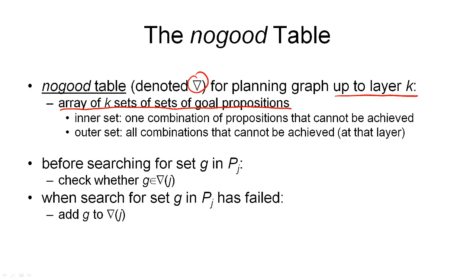The inner set is one combination of propositions that cannot be achieved. So that effectively is a sub-goal, one search node that we've looked at before. The outer set are all the combinations that cannot be achieved at that specific layer.